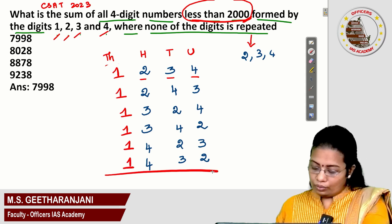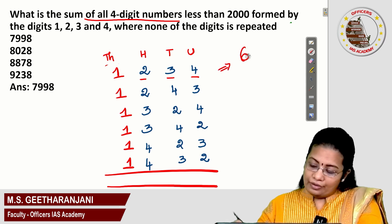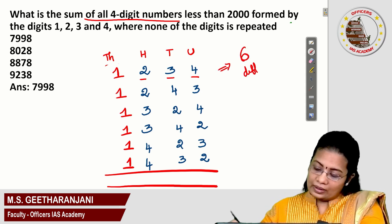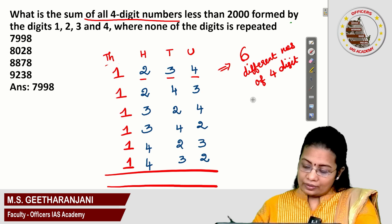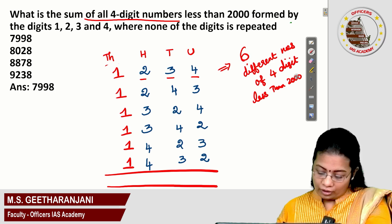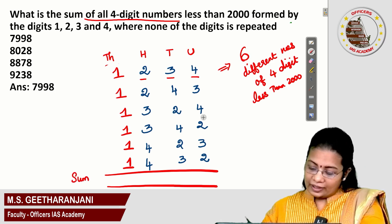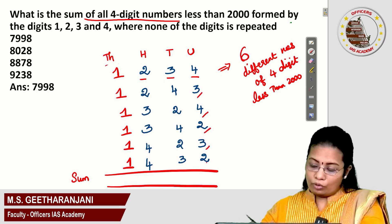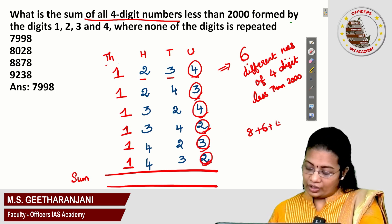They are asking you to find the sum. We have created 6 different four-digit numbers less than 2000. Now the requirement is to get the sum of all these 6 values. In the units place we have two 4s, two 3s, and two 2s. So 4+4=8, 3+3=6, 2+2=4, giving 8+6+4=18.